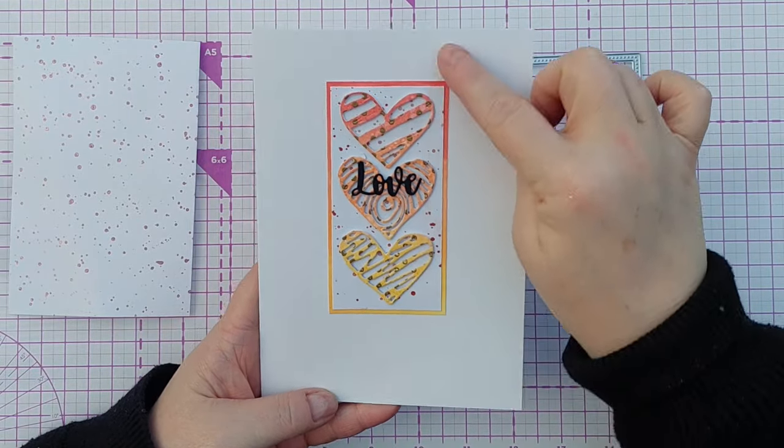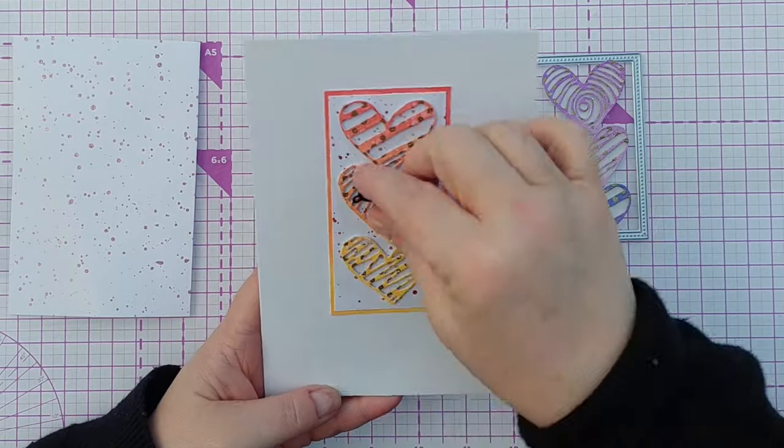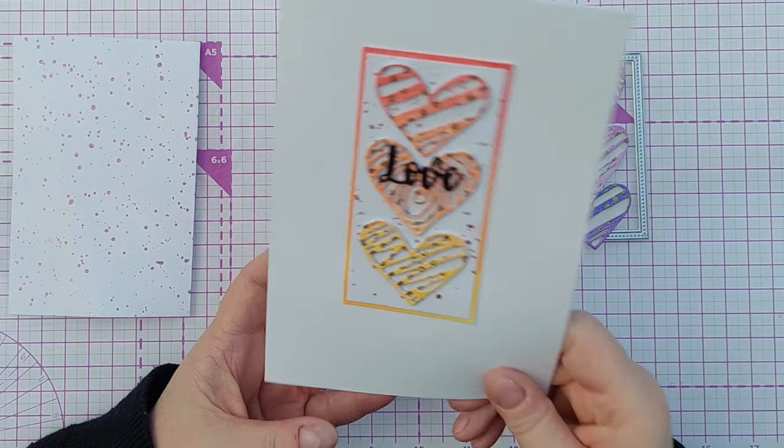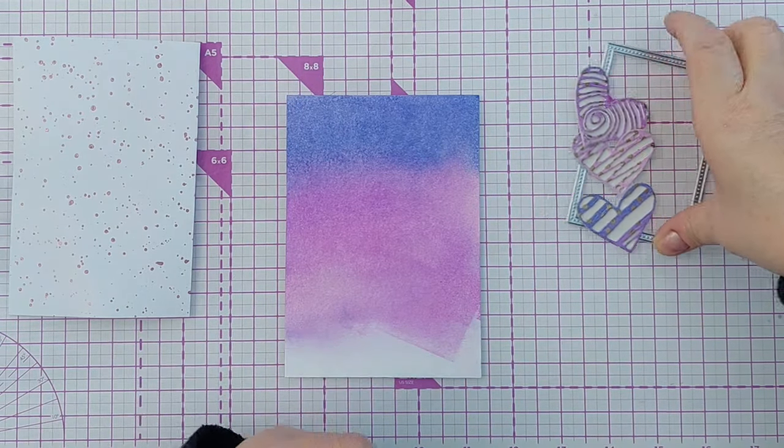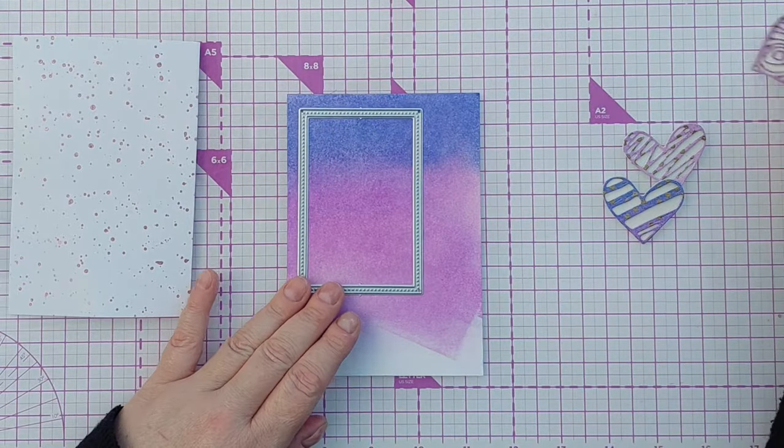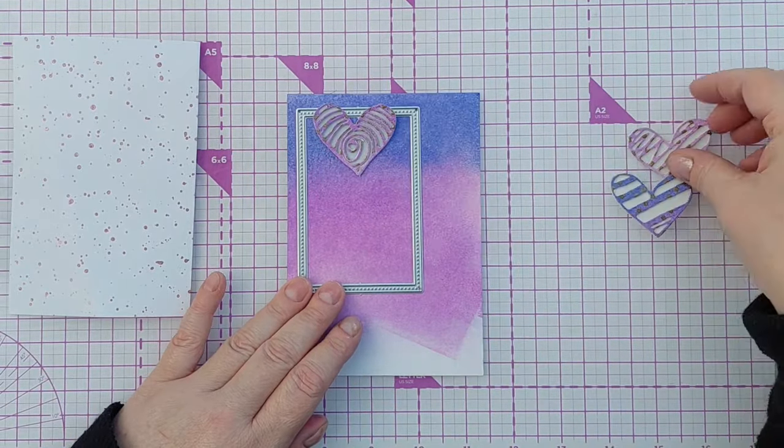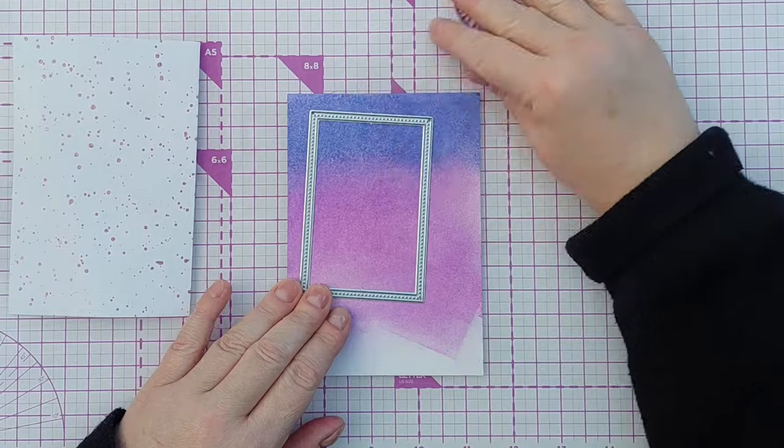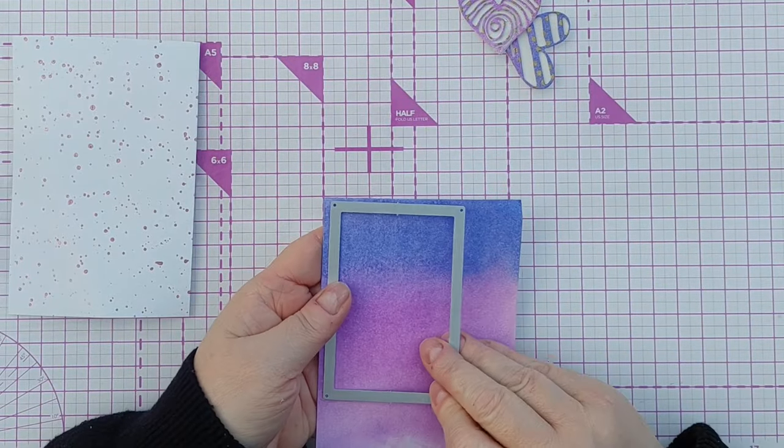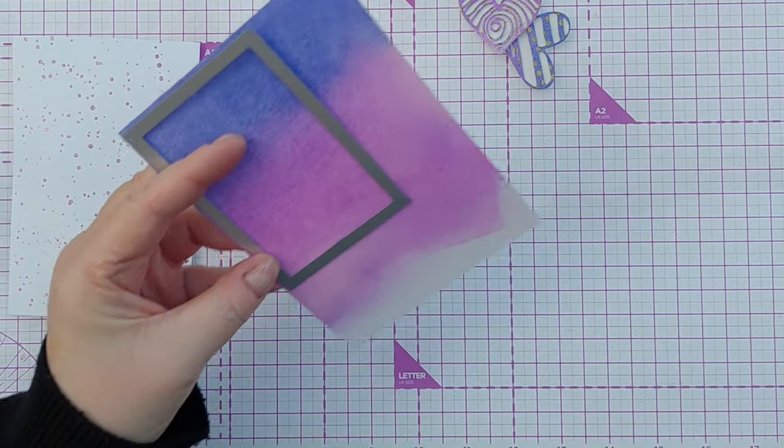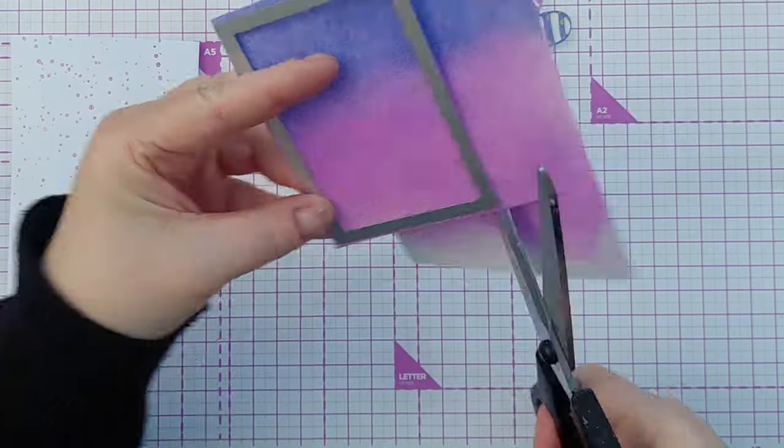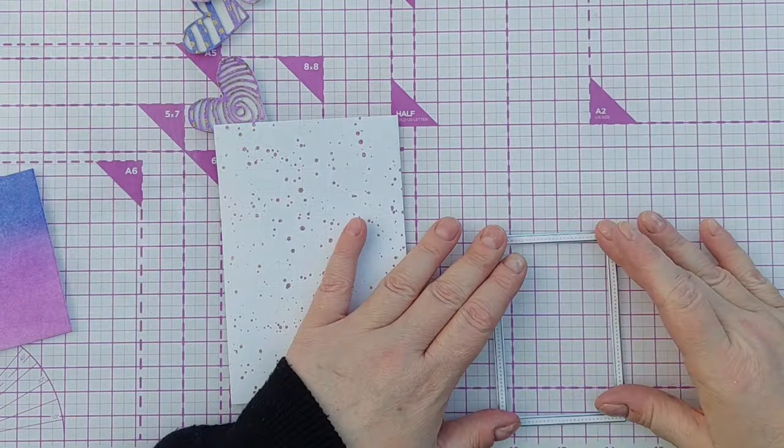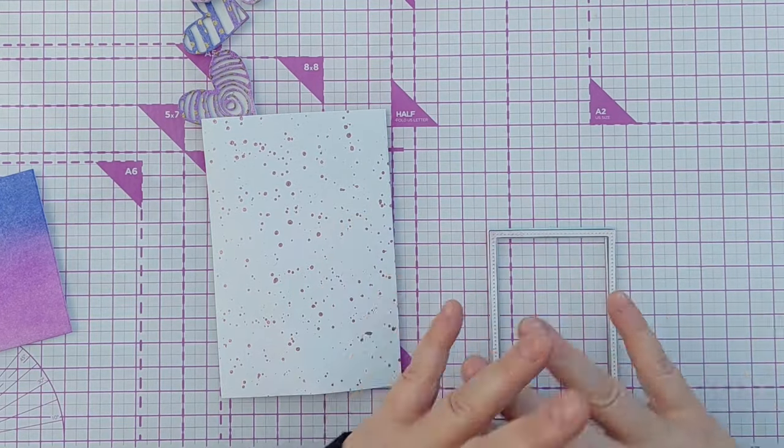So for this card I stuck my hearts on and used my guillotine to chop down a rectangle in the right size and then matted it, but I'm wondering about doing something slightly different. I've got this rectangle frame die, they don't fit in perfectly but they might look fun kind of overlapping it like that, just to change things up a bit. So I'm thinking I'm going to cut my frame from this.